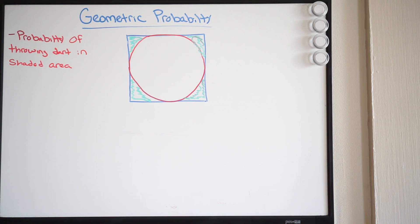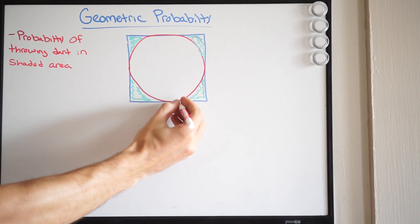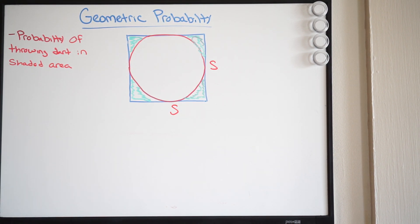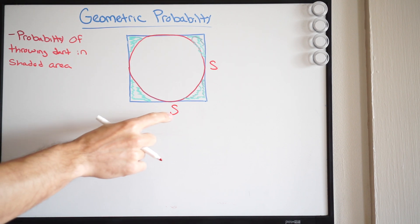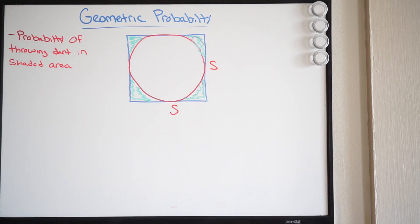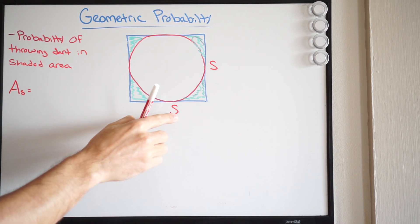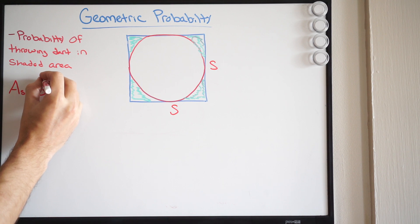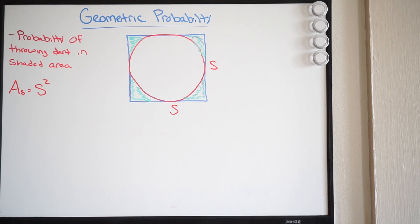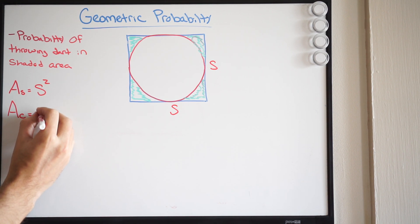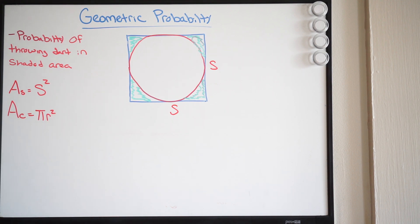We know that we're dealing with a square, so we can call this S and S because we know that all the sides will be equal. When we multiply both sides, that will give us the area of the square. So the area of the square is going to be S squared. How about the area of the circle? Well, the area of the circle is going to be pi R squared.